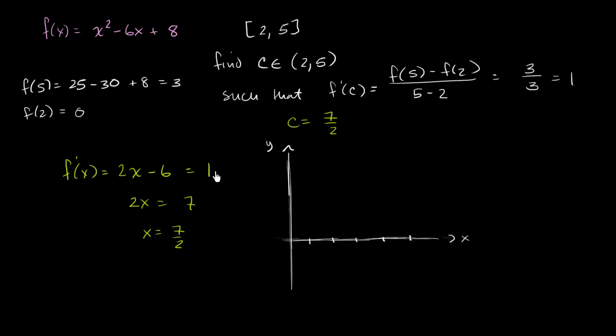So we already know that 2 is one of the zeros here. So we know that our function, if we wanted to graph it, it intersects the x-axis right over here. And you can factor this out as x minus 2 times x minus 4. So our other, the other place where our function hits 0 is when x is equal to 4 right over here. Our vertex is going to be right in between at x is equal to 3.